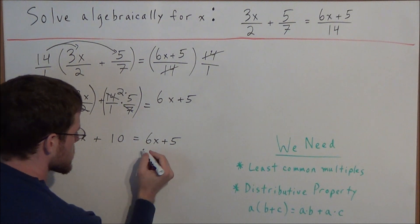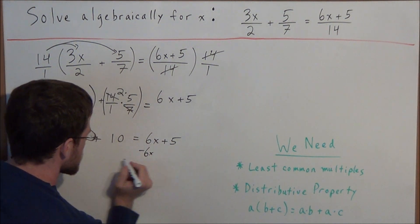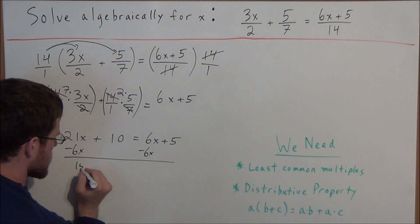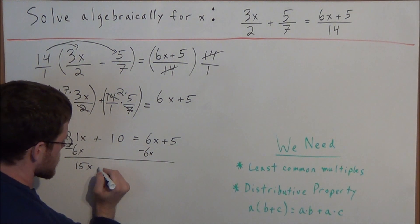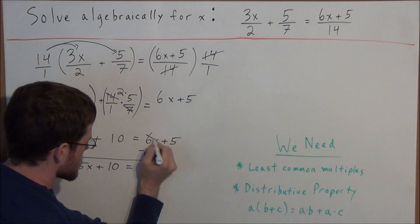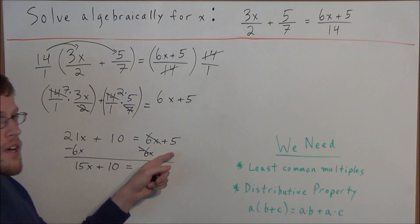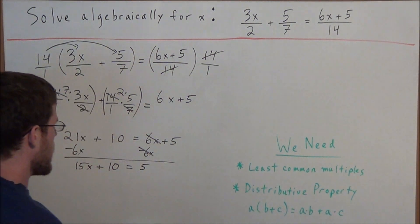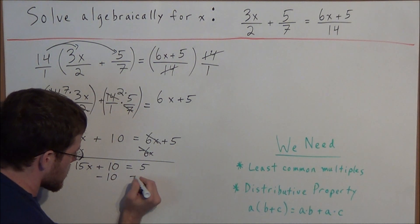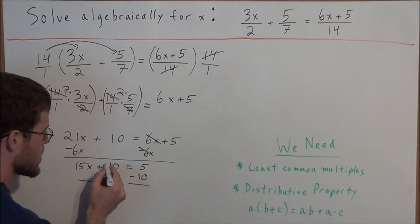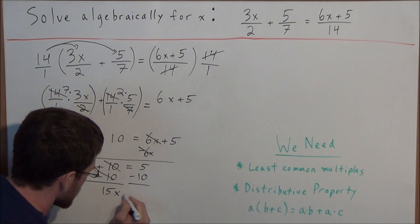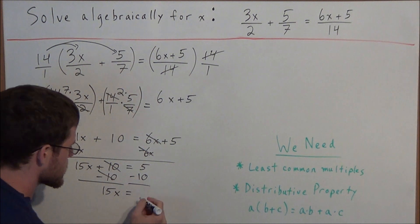Now we're going to get the x terms together by subtracting 6x from both sides. We have 21x minus 6x which is 15x, plus 10, and on the right-hand side 6x minus 6x cancels, leaving just 5. Then we subtract 10 from both sides: 10 minus 10 cancels on the left, leaving 15x equal to 5 minus 10, which is negative 5.